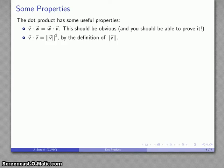Another useful connection to make is that if I take the dot product of a vector with itself, what I get is the square of the magnitude of the vector. And this follows just from the definition of how we find the magnitude of the vector.